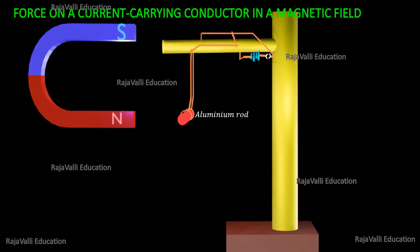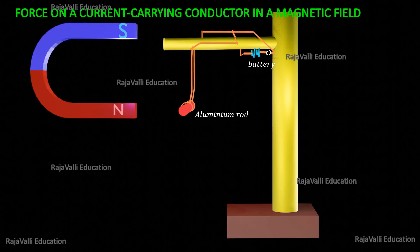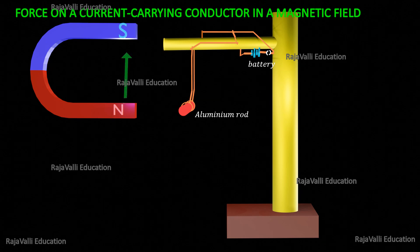First we see the experiment setup. Here the aluminum rod is suspended horizontally using connecting wires. These wires are connected to the battery and the key. Then a horseshoe magnet is placed such that the aluminum rod exists between the two poles of the magnet. The north pole of the magnet is below the aluminum rod and the south pole is above the aluminum rod.